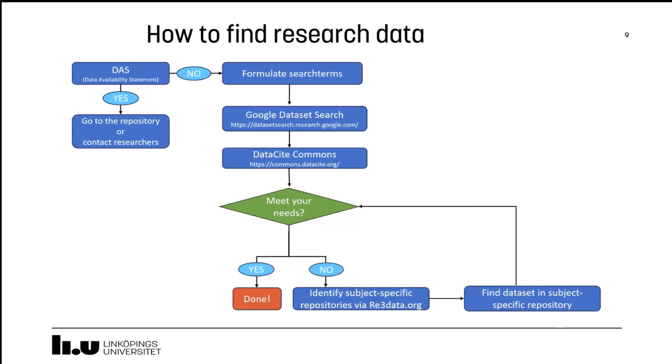When you find relevant research data, check if it meets your needs — for example, license, file format, and reusability. But if you still cannot find anything, search for a subject-specific repository on an open science tool called Re3Data, the registry of research data repositories. Re3Data is a register of 3,000 research data repositories worldwide, covering all scientific disciplines. You can search for a relevant repository by entering one or more keywords, or you can search by subject or type of content. Re3Data displays basic information about the repository. When you find a repository that seems relevant, go to the repository and search for datasets there, and check if they meet your needs.